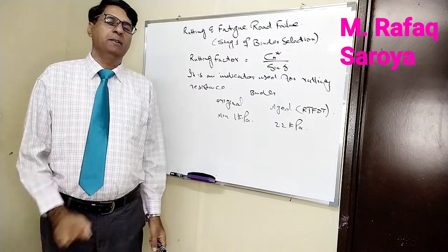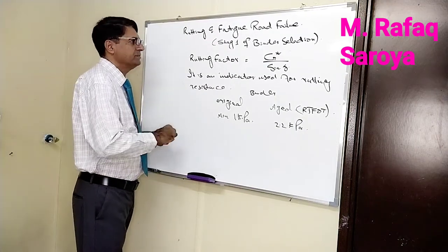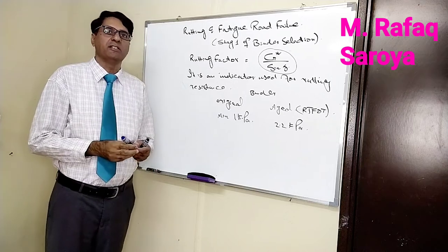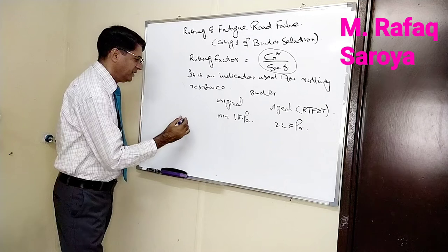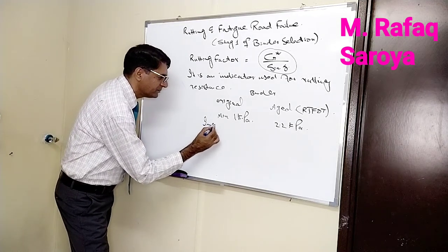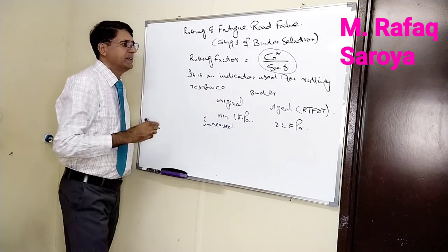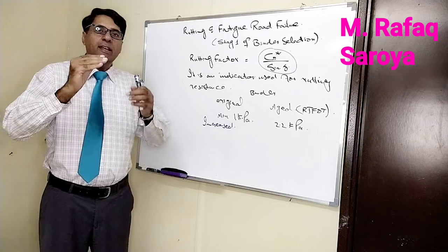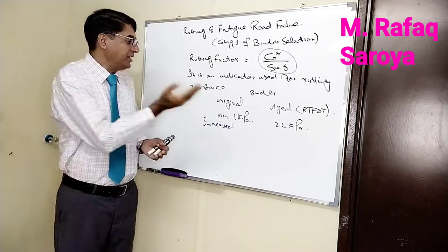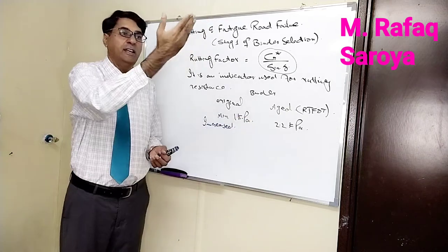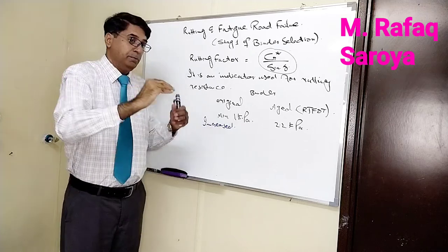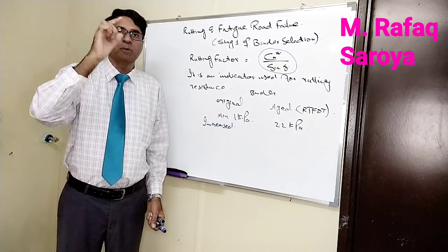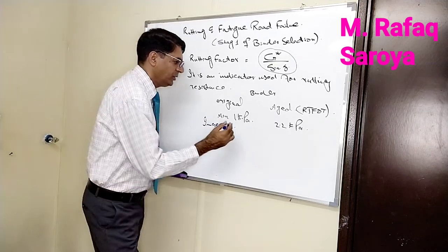Keep one thing in mind: this factor g star by sine delta, if its value is going to increase from 1 kPa up to 2.2 kPa or higher, it means this is more beneficial for us. Because these are minimums, if it's exceeding, it means the value is increasing. Increase means this material is going to possess elastic properties.